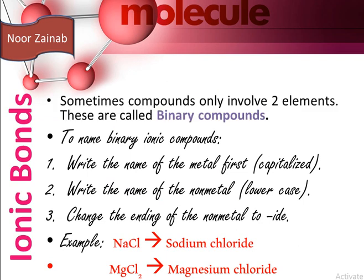Sometimes compounds only involve two elements — these are known as binary compounds. To name binary compounds, first write the name of the metal in capitalized manner, then write the name of the non-metal in lowercase and change the ending to '-ide'. For example, NaCl is known as sodium chloride and MgCl₂ is known as magnesium chloride.